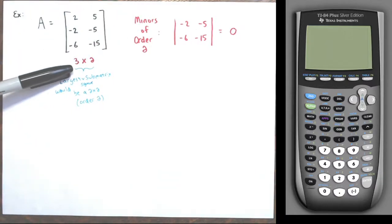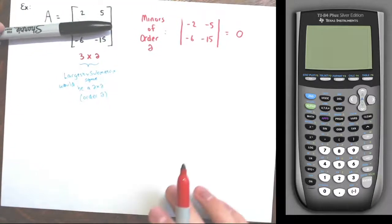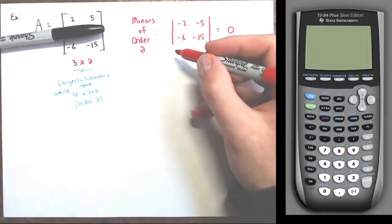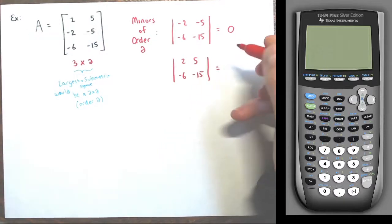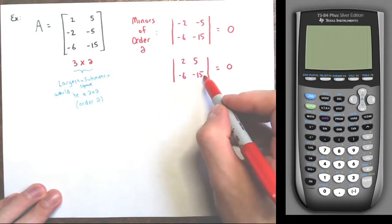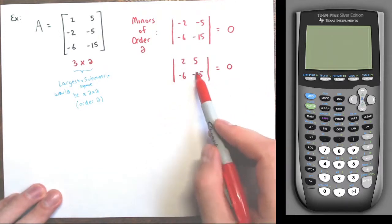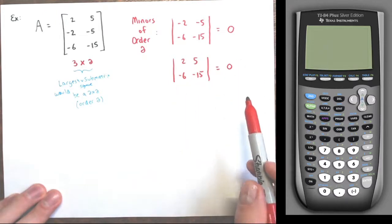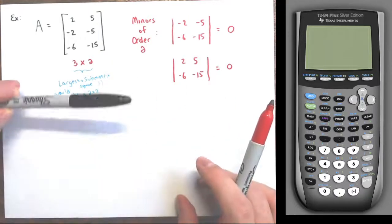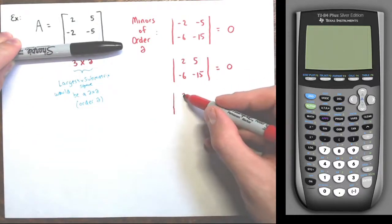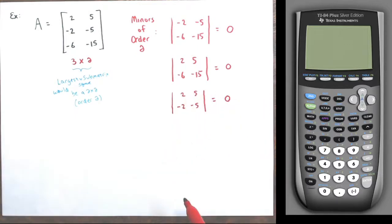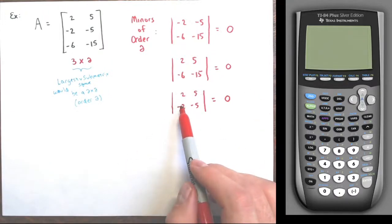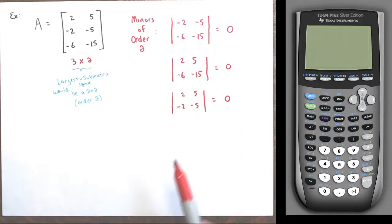I need to keep going — I'm looking for non-zero minors. Removing the second row gives the submatrix two, five and negative six, negative fifteen — again this is zero, because the first row times negative three gives the second row, or cross-multiplying: negative thirty minus negative thirty equals zero. Removing the third row gives another minor: two, five and negative two, negative five — also zero, since the second row is just negative one times the first row. Either way the determinant is zero: negative ten plus ten.